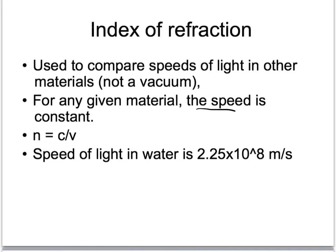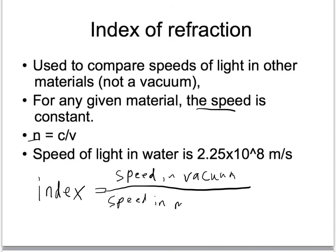We compare the speed of light in material using an index of refraction, which is the variable n. The way this works is index of refraction equals the speed of light in a vacuum divided by the speed in a given material.